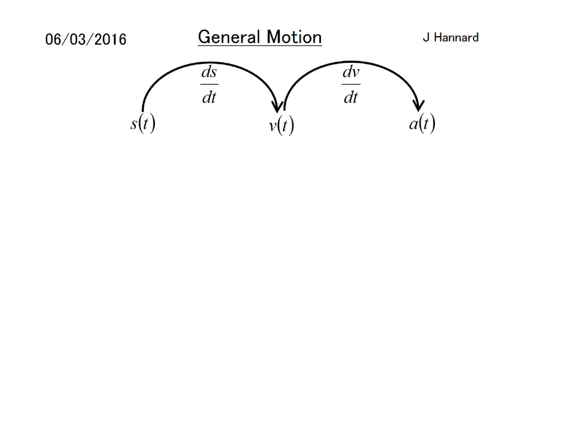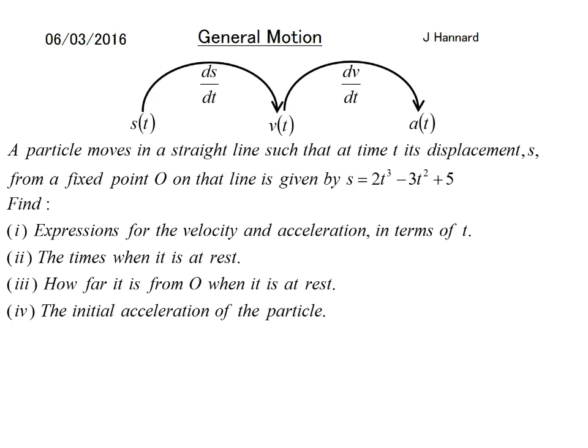Classic question on an OCR FSMQ paper: A particle moves in a straight line such that at time t its displacement s from a fixed position O, which is the origin on that line, is given by s = 2t³ - 3t² + 5.